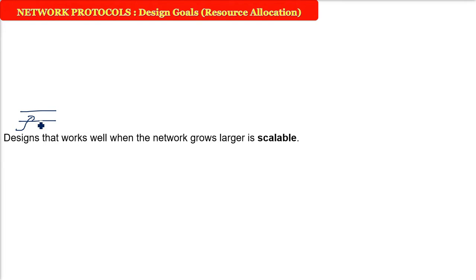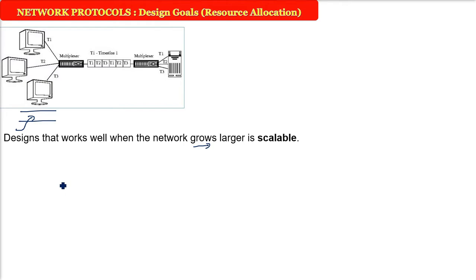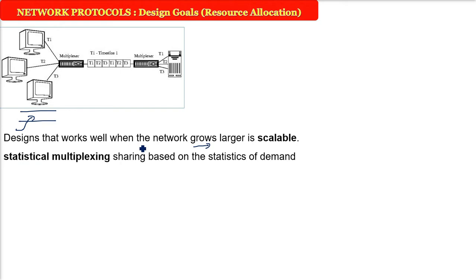Scalability means that as machines and hosts grow, the network should also grow. When the number of people and systems increases, there will be more demand. One way to address this is statistical multiplexing - assigning bandwidth based on statistics of demand, giving it to whoever wants it for a certain time.